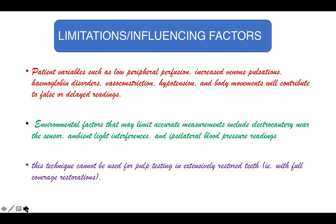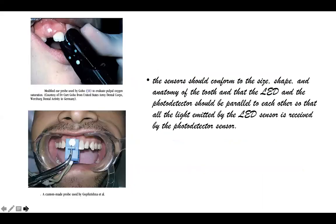Another major limitation of the pulse oximeter is that it cannot be used for pulp testing in extensively restored teeth, such as teeth with full coverage restorations. To get an accurate reading, precise placement of the sensor on the tooth is very important. The sensor should conform to the size, shape and anatomy of the tooth, and the LED and photodetector should be parallel. An ear probe modified by Goho has been used to evaluate pulp oxygen saturation, with two plates placed parallel to each other so light is correctly received by the photodetector. A custom-made probe by Dr. Gropi Krishna et al. has also been developed for testing tooth vitality.